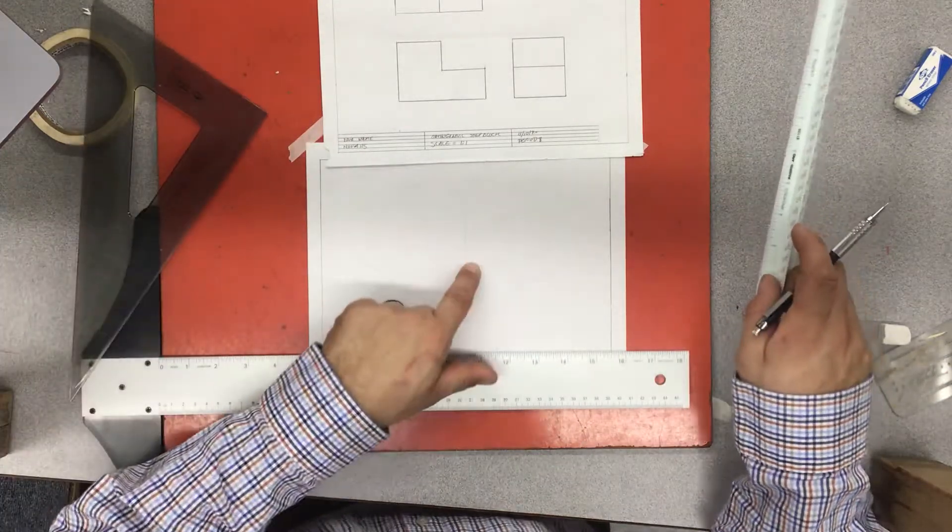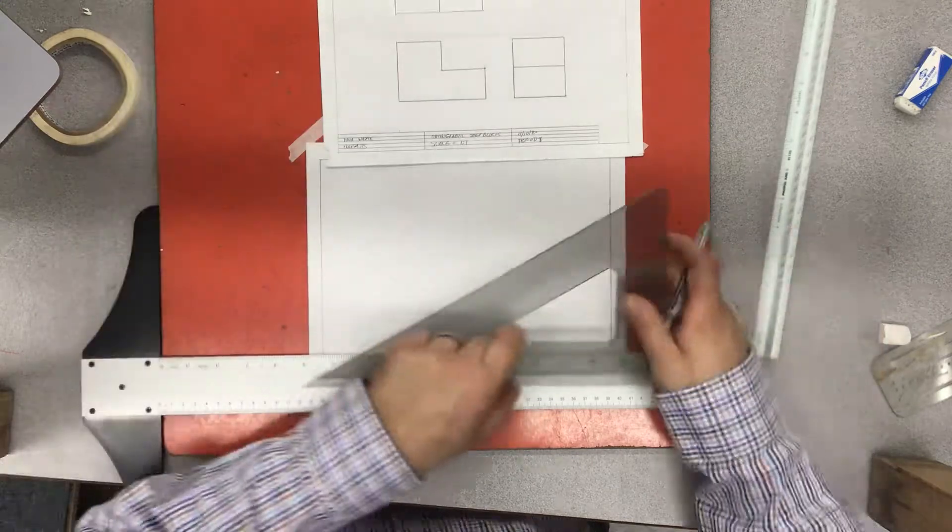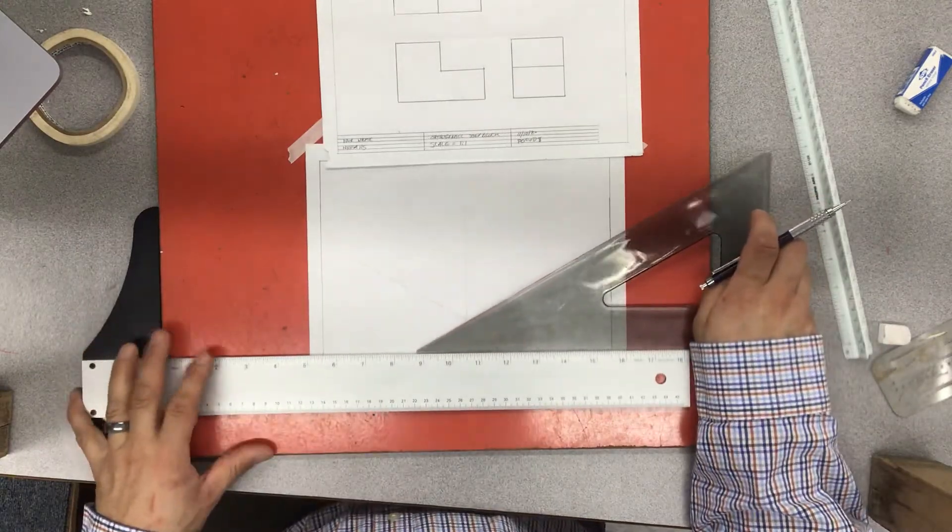Okay, so one, two, three lines. Notice how they were all drawn with the triangle, and the T-square is nice and tight against the side of my board.